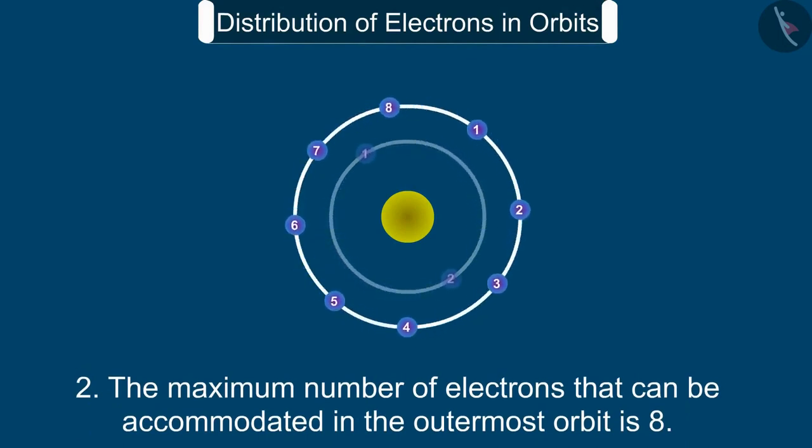The maximum number of electrons that can be accommodated in the outermost orbit is 8.